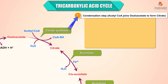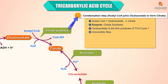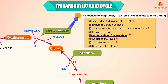Step 1 is the condensation step. Acetyl coenzyme A joins oxaloacetate to form citrate. The enzyme is citrate synthase. Oxaloacetate is the first substrate of the citric acid cycle, and this is an irreversible step. Oxaloacetate is considered the carrier of the cycle, the first substrate, and has a catalytic role in the cycle.